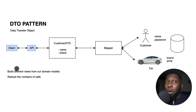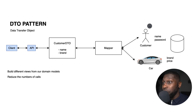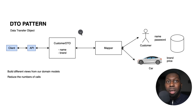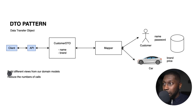The beauty of this is that you can build different views from your domain models. Instead of making four separate HTTP requests — one for the customer, one for the car, one for transactions, one for the address — you can bundle everything into one request, and the DTO model takes care of that. So basically you can build different views of your domain models as well as reduce the number of API calls.